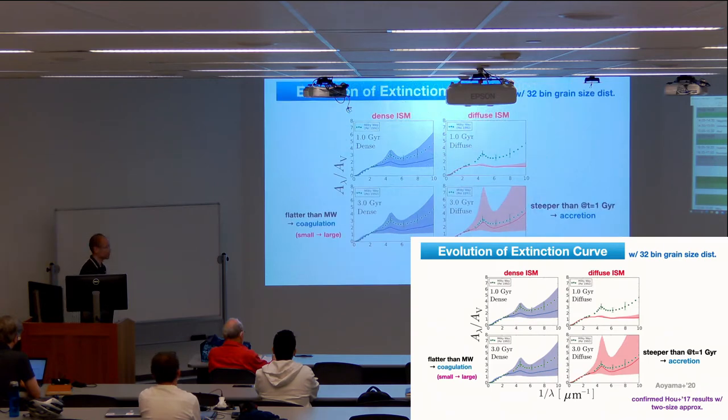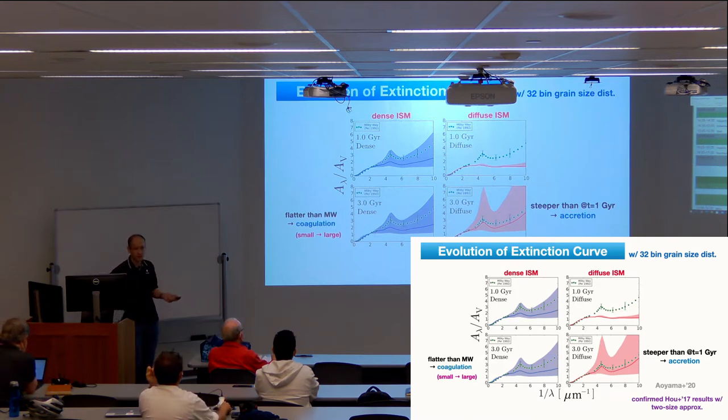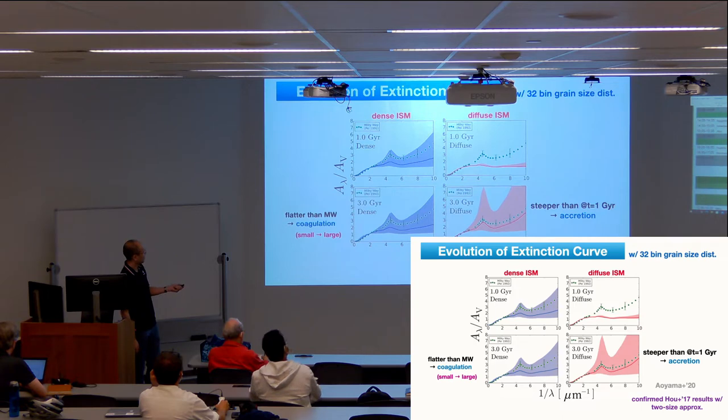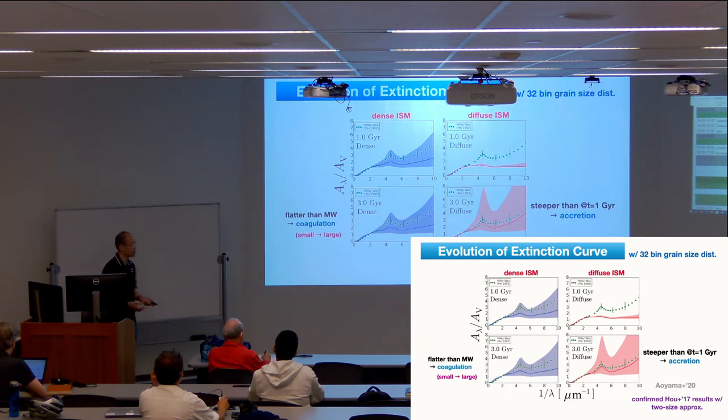The evolution on the extinction curve can also be evaluated. Thanks to these detailed simulations, we can look at dense ISM and diffuse ISM separately. Depending on time they would have different extinction curves. In the beginning in the diffuse phase, the extinction curve is very flat due to only the large grain dominated phase. On the dense ISM you start to have small grains so you gradually start to crank up. At very late time you will have this accretion phase where you become steeper because of the small grain increase and you will start to reproduce the Milky Way type extinction curve.